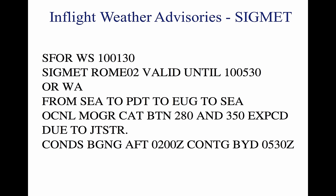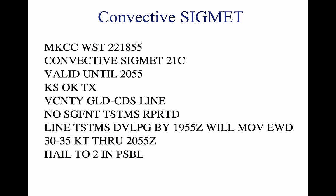A SIGMET is issued under an alphabetic identifier from November through Yankee, excluding Sierra and Tango. The first issuance of a SIGMET is designated as an Urgent Weather SIGMET (UWS). Reissued SIGMETs for the same weather phenomenon are sequentially numbered until the weather phenomenon ends. A Convective SIGMET (WST) is an in-flight weather advisory issued for hazardous convective weather affecting the safety of every flight. Convective SIGMETs are issued for severe thunderstorms with surface winds greater than 50 knots, hail at the surface greater than or equal to 3/4 inch in diameter, or tornadoes. They are also issued for embedded thunderstorms, lines of thunderstorms, or thunderstorms with heavy precipitation affecting 40% or more of a 3,000 square mile or greater region.